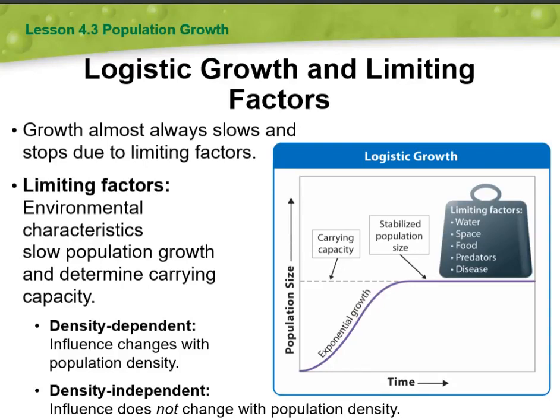Welcome to this week's overview. During this week we're going to talk about logistic growth and limiting factors. Logistic growth refers to a type of population growth where the population initially grows rapidly but eventually levels off due to environmental constraints. It's like a roller coaster ride that starts off fast but then slows down as it reaches the top.